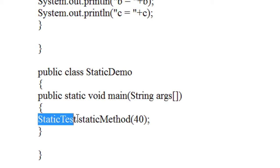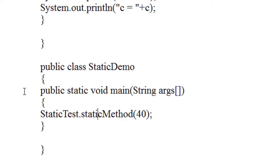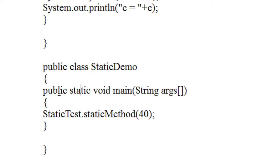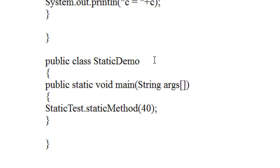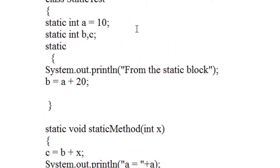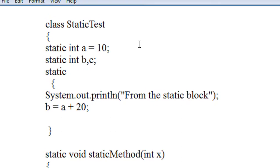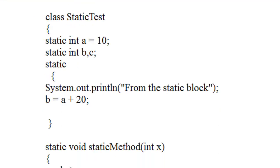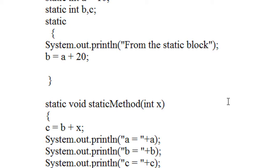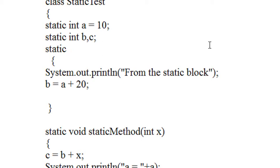I invoked that method by using just the name of the class. This is why we declare the main method as static — the compiler needs no object to invoke the main method, so it is possible for the compiler to invoke main by just using the name of that class. This is how a static method executes in Java. Thank you for watching — you can find the complete notes and source code on my blog, the URL is in the description. Please subscribe for more video updates.